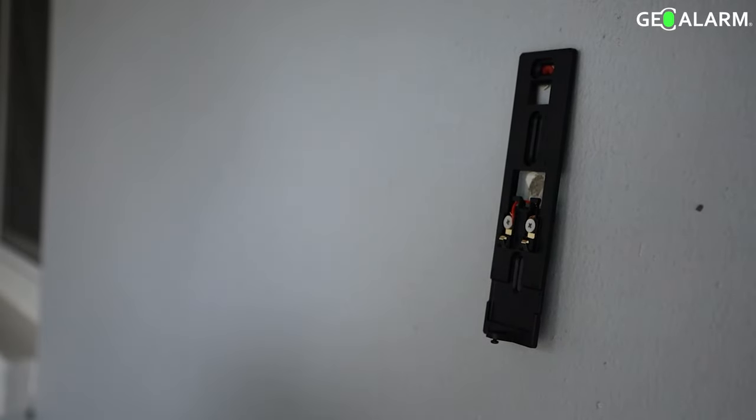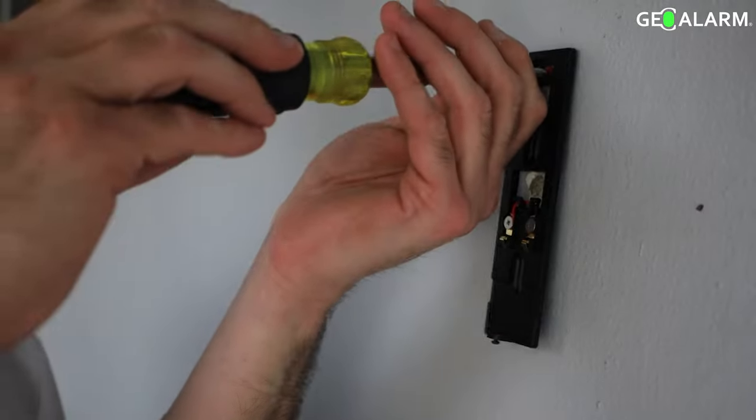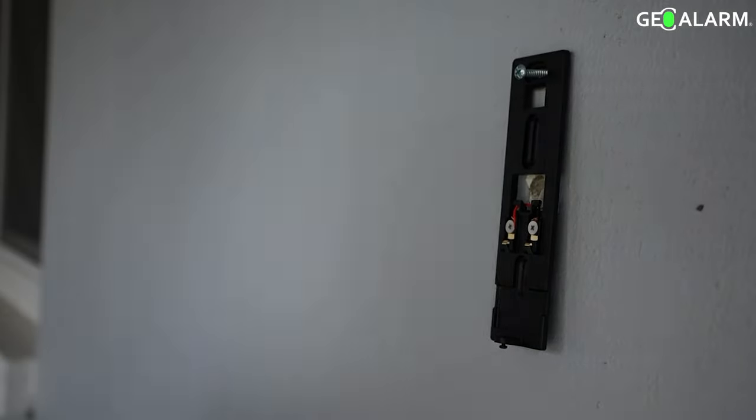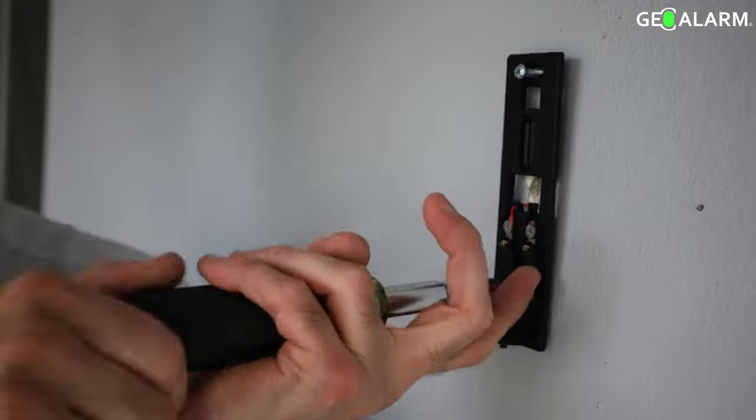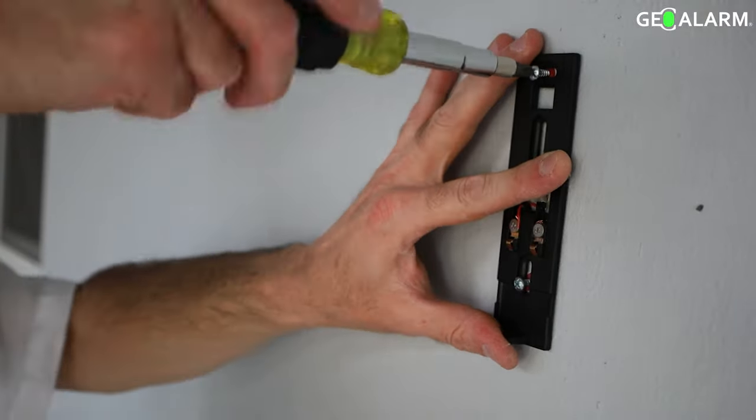And as you can see there, the wires are both in—both the red and the black wire. He's going to go ahead and tighten the screws into the anchors now so that we can secure that backplate to have it ready for the doorbell to be mounted to it.